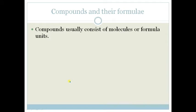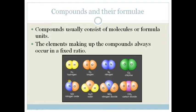Compounds usually consist of molecules or formula units. The elements making them up occur in a fixed ratio. If you look here, you can see H2, O2, N2, and Cl2. These are called diatomic molecules. They are gases found naturally in the air, and they occur naturally in pairs.